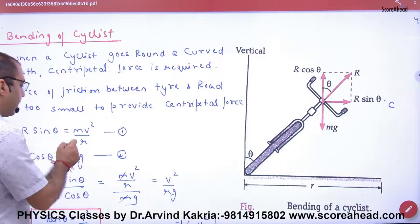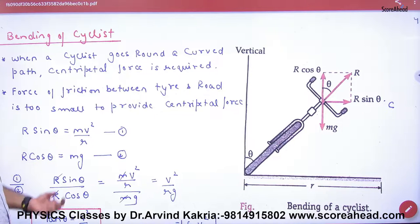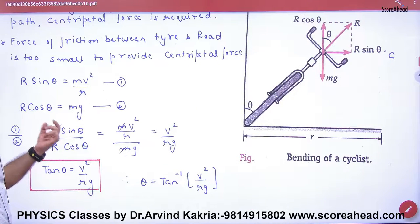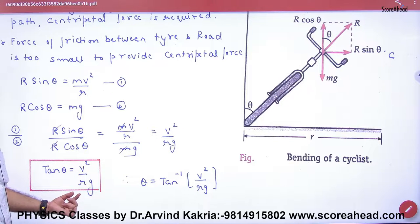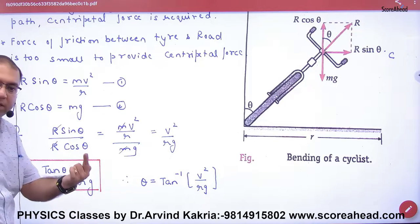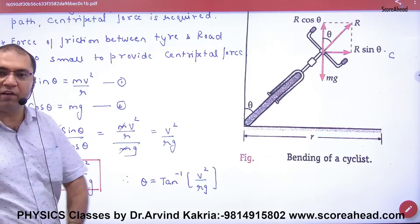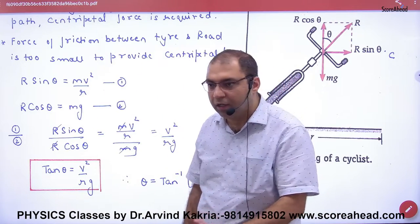So R sin θ equals mv²/r, where v is the velocity and r is the radius. Dividing the two equations, R cancels out, giving tan θ equals v²/rg. So if I give you the velocity and the radius, tan θ equals 1 means θ equals 45 degrees — so the cyclist will bend at 45 degrees to complete the turn.